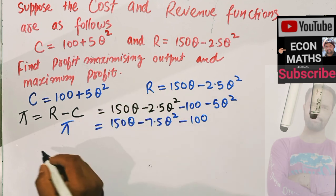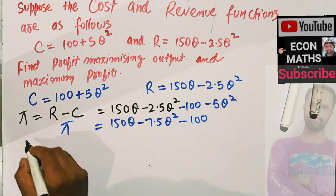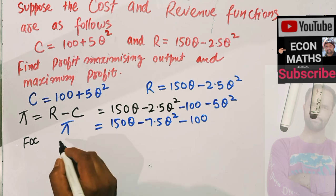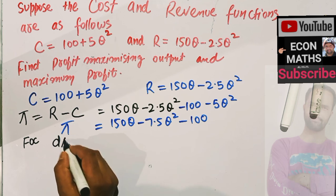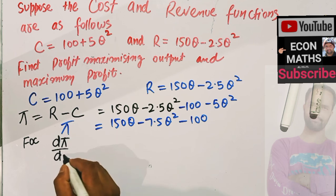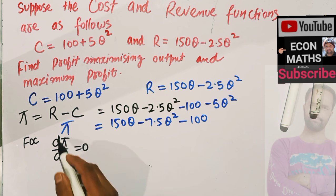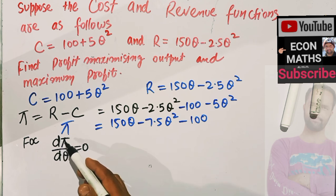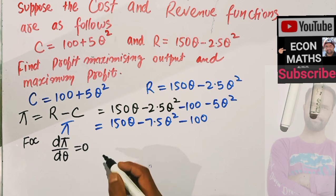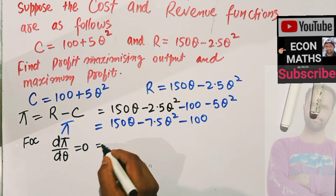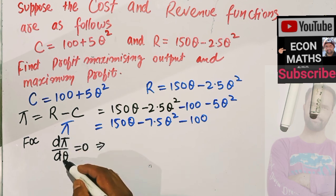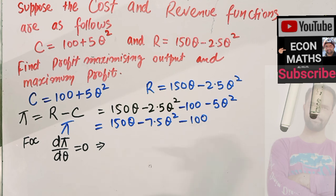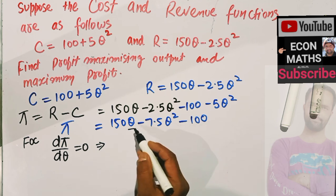The first order condition for profit maximization is that dπ/dq should be equal to 0. That means profit maximization requires that marginal profit should be equal to 0, which implies taking the derivative of the profit function with respect to output.